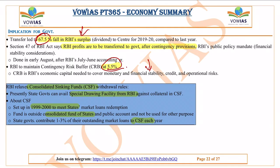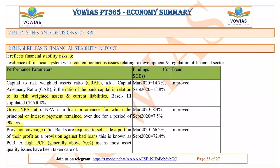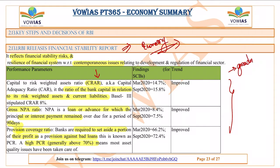The next topic covers some key steps taken by RBI, starting with the Financial Stability Report (FSR). RBI releases the FSR every year, giving a clear picture of the economy by comparing key indicators with previous years. It shows what happened in the economy over the last year and the current economic status. There is no need to remember all trends, but key terms are important. In economy, there is no uniform trend — NPA, growth rate, CRAR — none of these have moved consistently in one direction over the past 10 years.